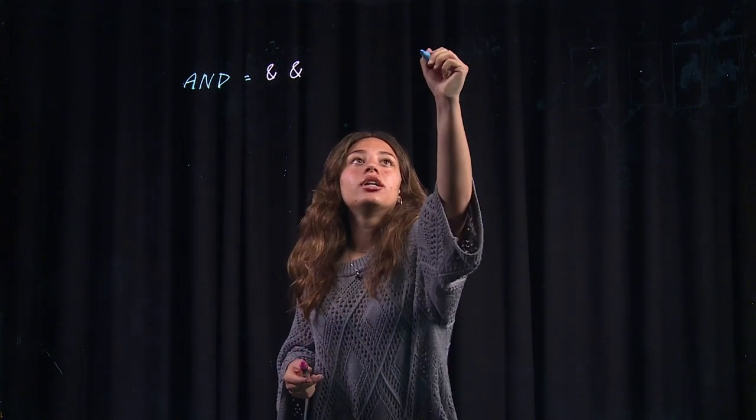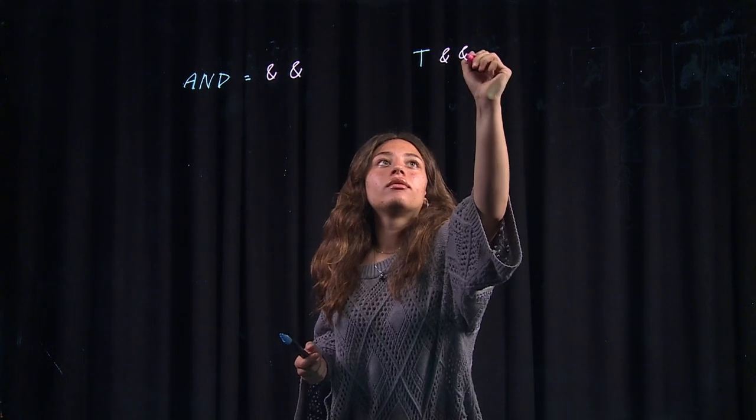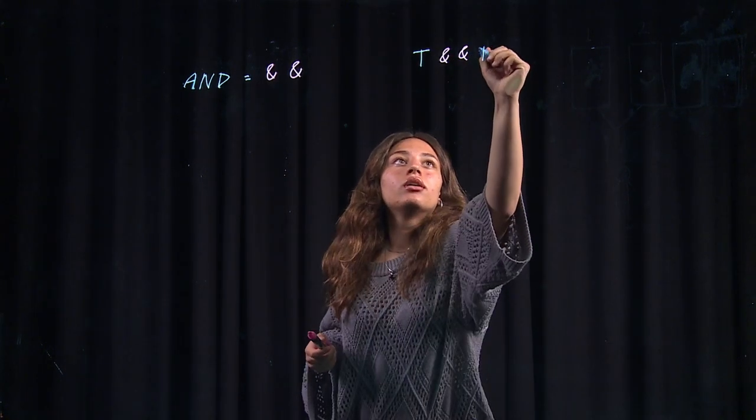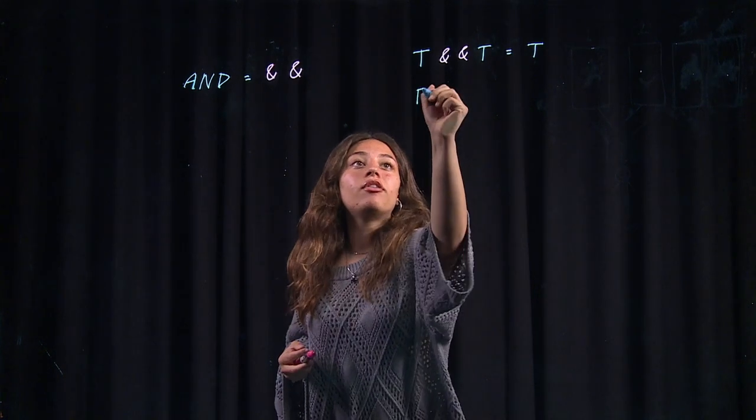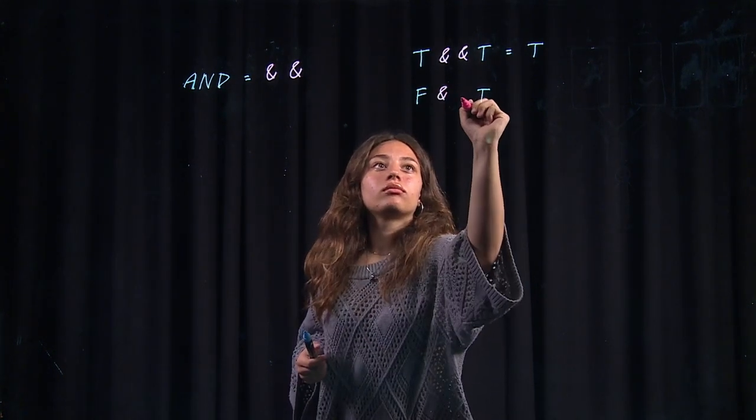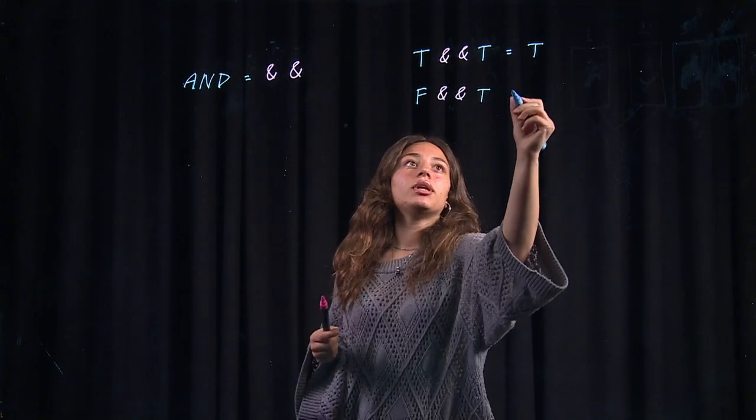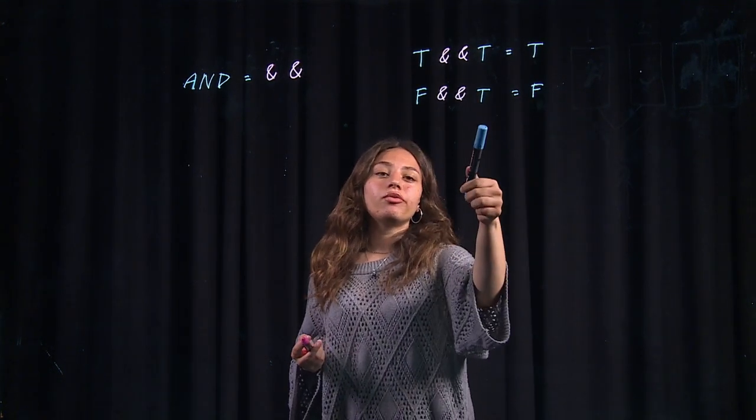So if I have true and true, that is going to equal true. However, if I have false and true, that is going to equal false. And of course, if both of them are false, it's also going to equal false.